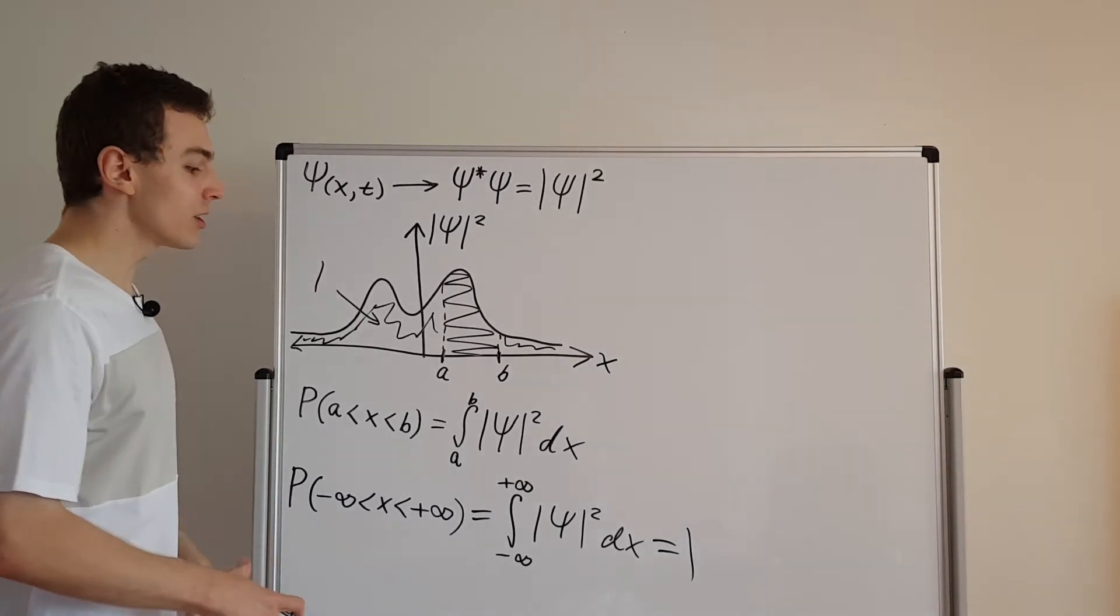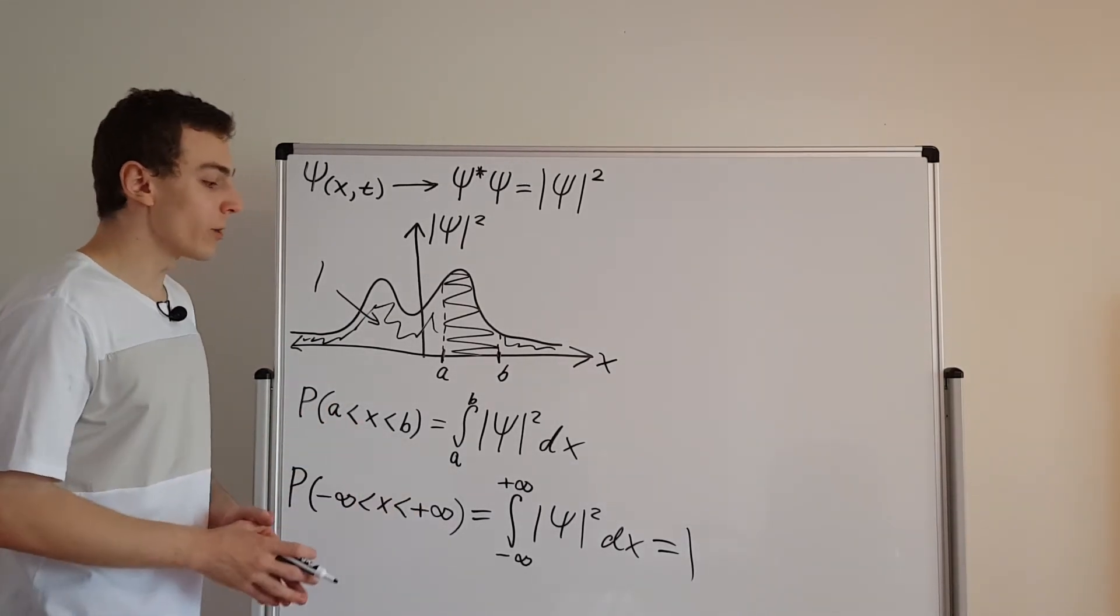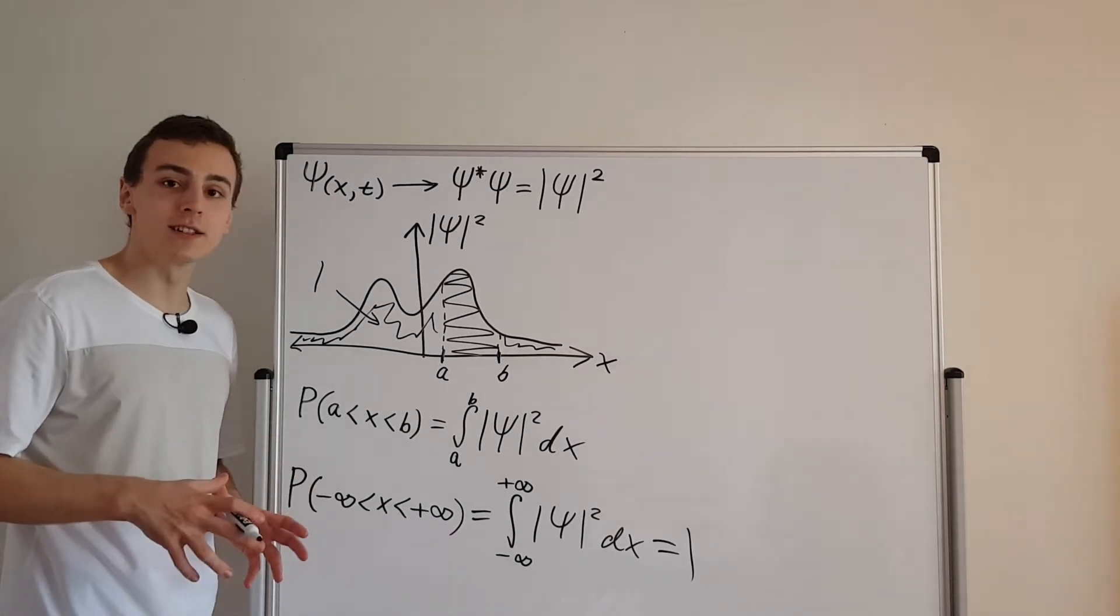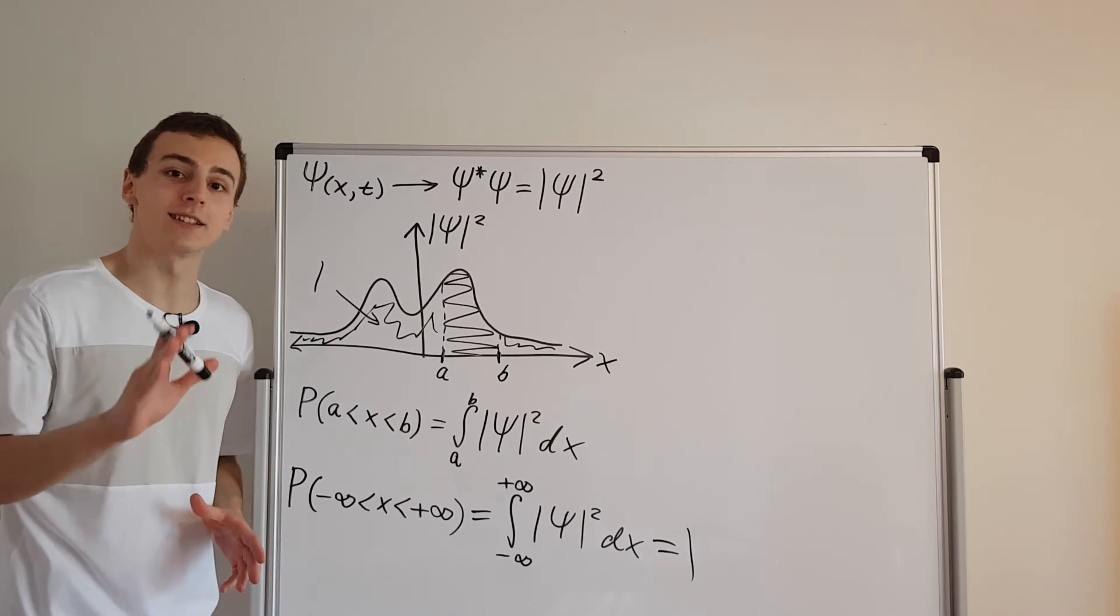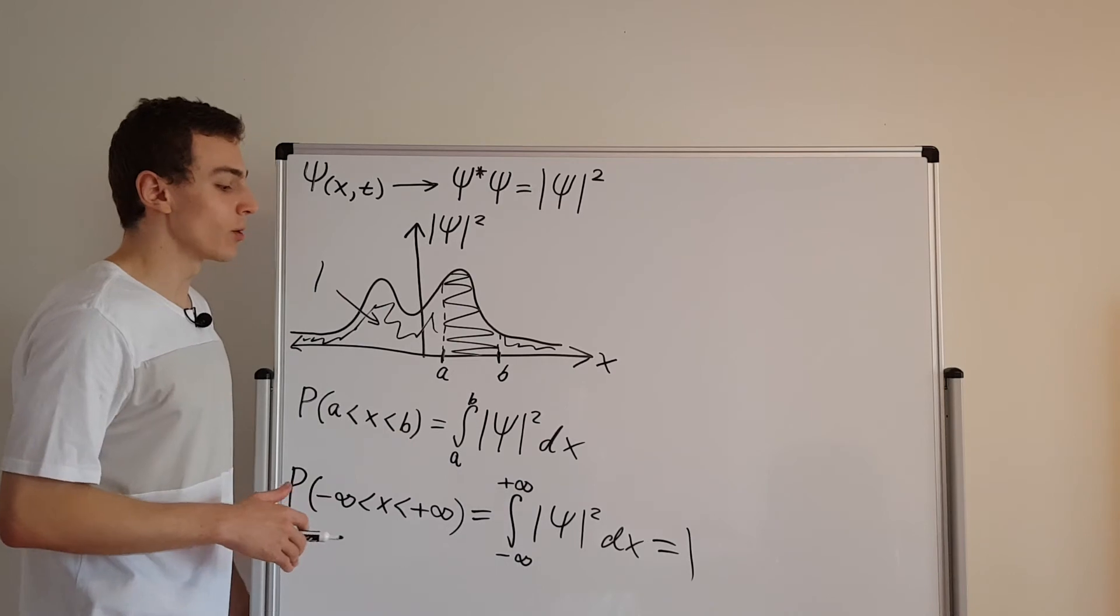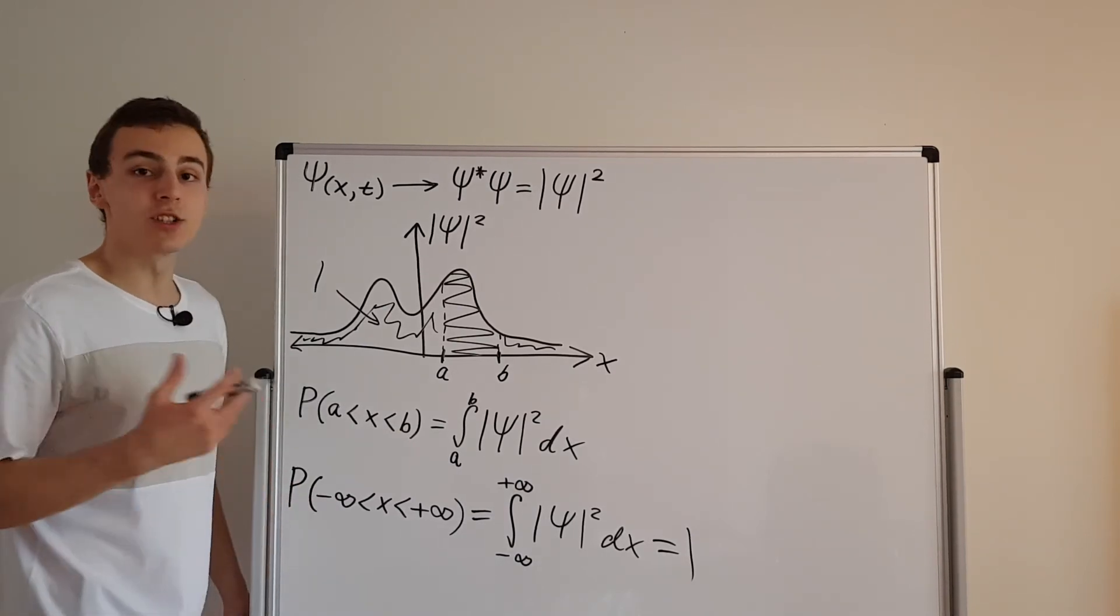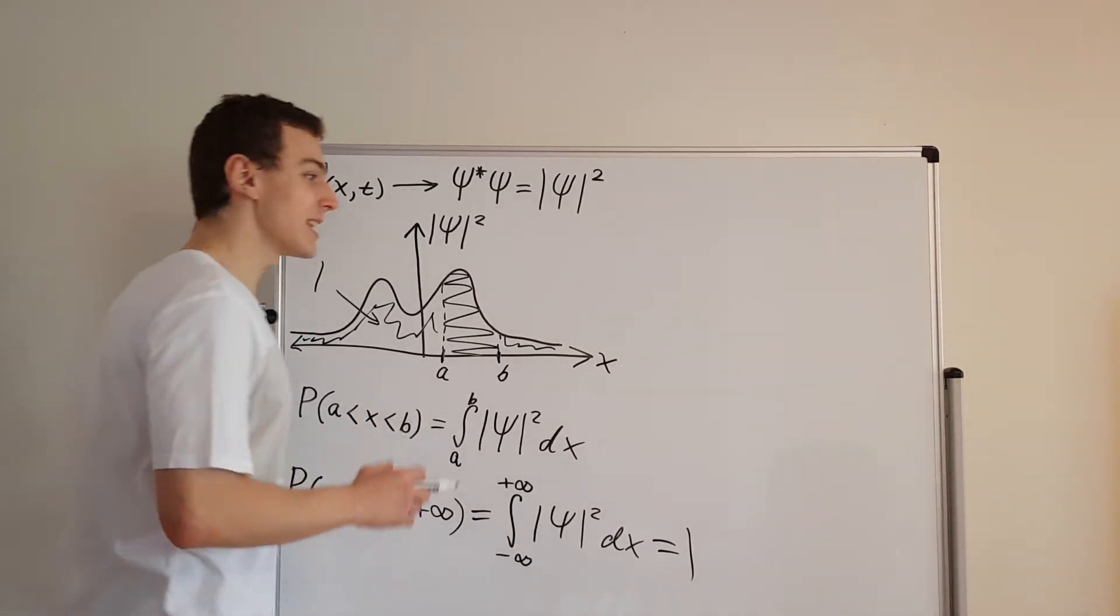So how would we actually go about normalizing the wave function? Well, we'd have to consider the constants out the front, and there's actually another video in this playlist that discusses that. First of all, I want to have a look at what is going to happen to the wave function if it's not normalizable or it's not square integrable.